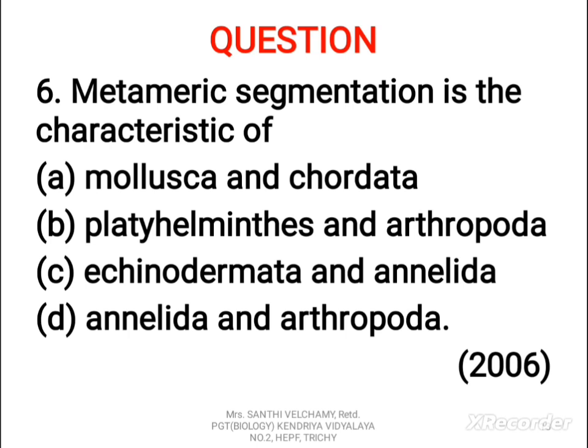Next question: metameric segmentation is the characteristic of A) Mollusca and Chordata, B) Platyhelminthes and Arthropoda, C) Echinodermata and Annelida, D) Annelida and Arthropoda. The correct answer is D — Annelida and Arthropoda. The term metamerism refers to a linear repetition of parts in an animal body. It occurs in three highly organized phyla: Annelida, Arthropoda, and Chordata. That is why D is the correct answer.